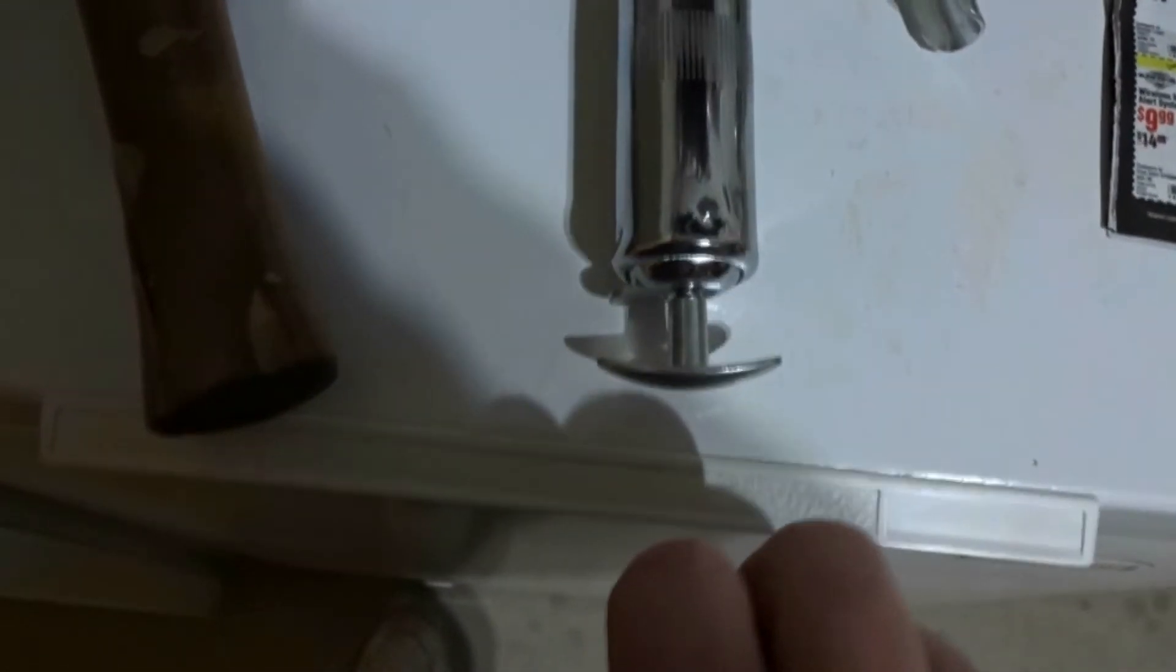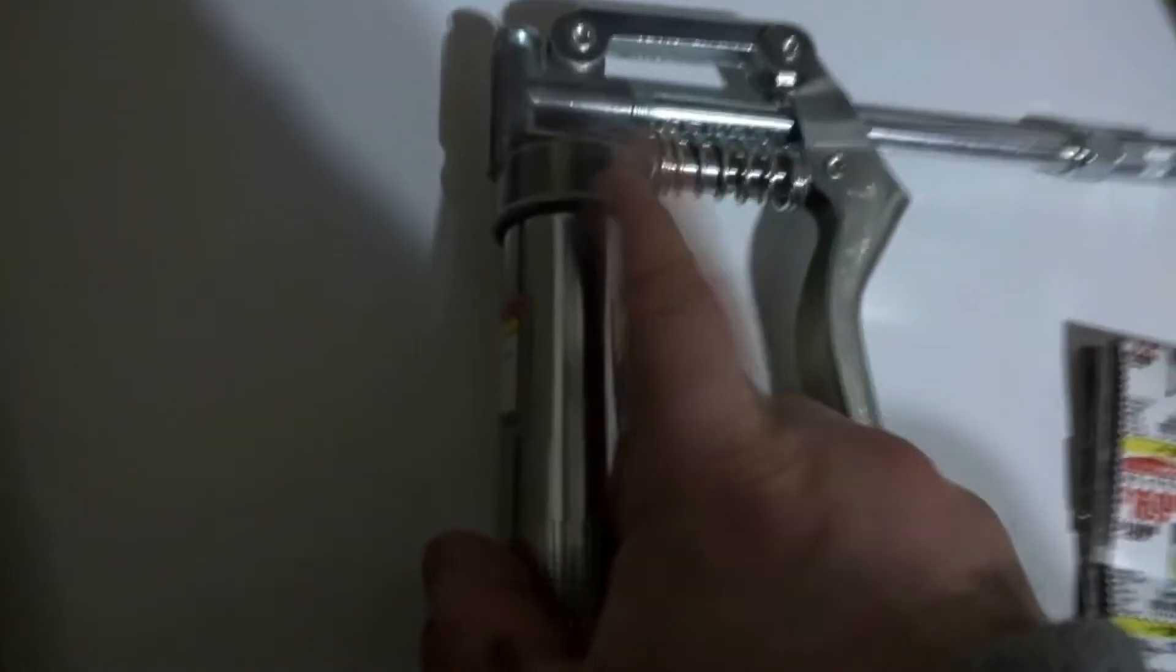And then you got your handle here and you're going to have to pull this out. And then you'll screw the top off. So you got that pulled out and it does come with a tube of grease.